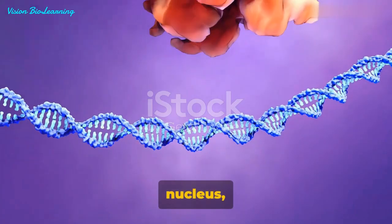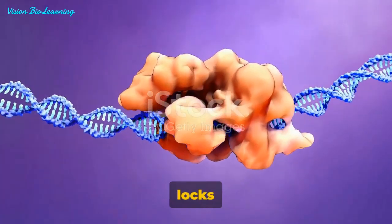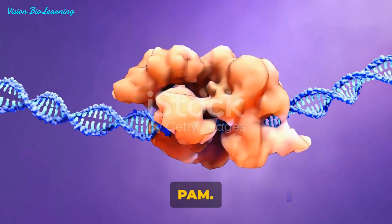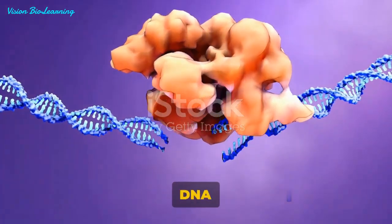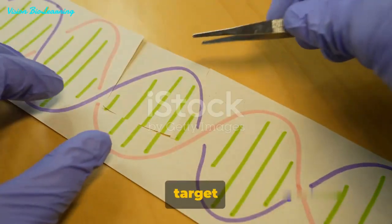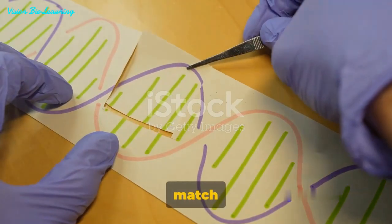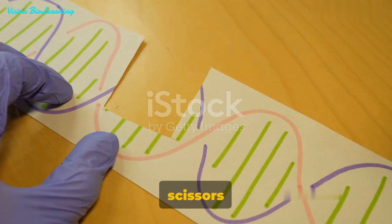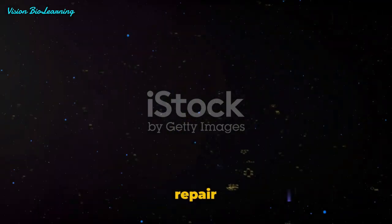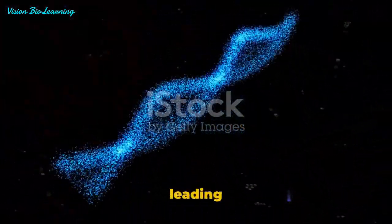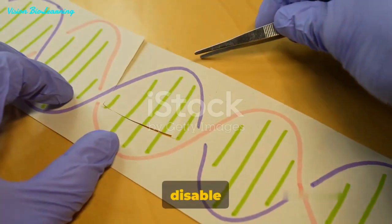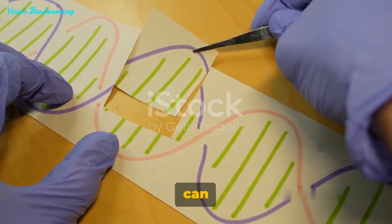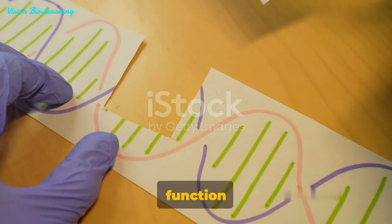Once inside the nucleus, the resulting complex locks onto a short sequence known as the PAM. The Cas9 then unzips the DNA and matches it to its target RNA. If the match is complete, the Cas9 will use two tiny molecular scissors to cut the DNA. When this happens, the cell attempts to repair the cut. However, this repair process is not perfect and is prone to errors, leading to mutations that can disable the gene. These mutations can help researchers understand the function of the gene, opening up a world of possibilities for studying and potentially rectifying genetic diseases.